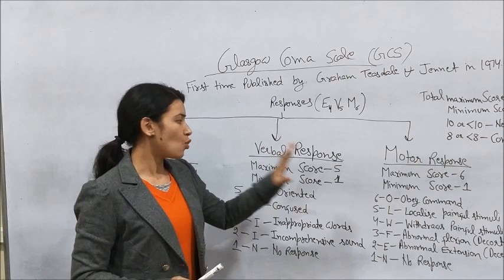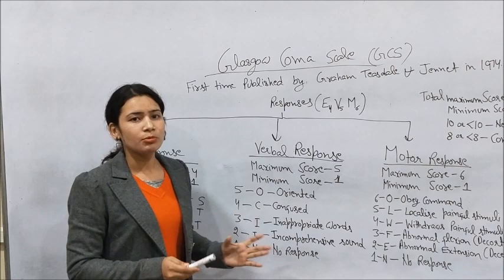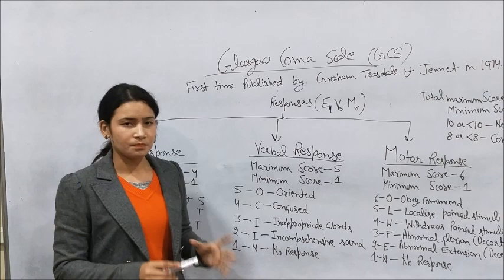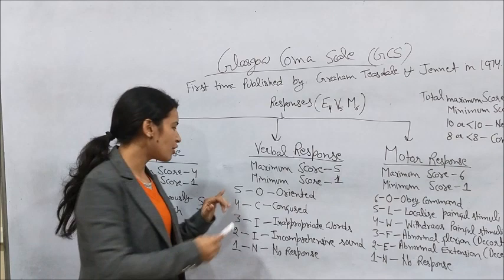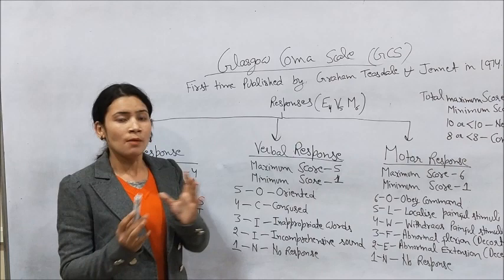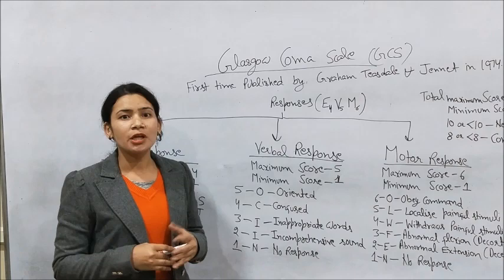The next one is verbal response. Verbal response has a maximum scoring of five and a minimum scoring of one. We give five scores when the patient is oriented — for example, if we tell the patient they are in the hospital and they correctly confirm they are in the hospital. If the patient is confused and does not know where they are, we give four scores.